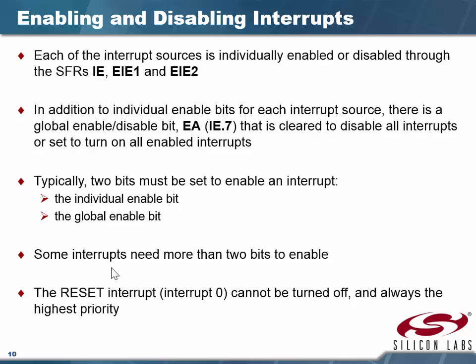If you clear bit 7 — EA — all interrupts other than reset are disabled. Note that the watchdog timer is tied to the reset and is not part of the interrupt structure. If you set EA equal to zero, you disable all interrupts other than reset. If you set it to one, you don't enable all interrupts, only the ones you've individually enabled. So you can either clear them all or enable selected interrupts.